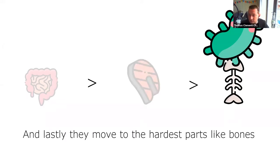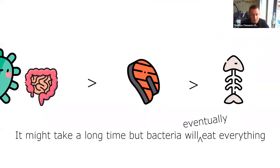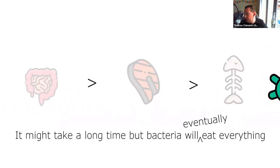After the internal organs, bacteria move on to the slightly tougher food — the muscles — and eventually they move on to the really hard parts like the bones. It might take a very long time, but they will get through all of them. Some bacteria specialize in eating just bones. Eventually, bacteria will get through everything. That's also why you don't see many skeletons lying around generally — because eventually the bacteria will completely eat them.